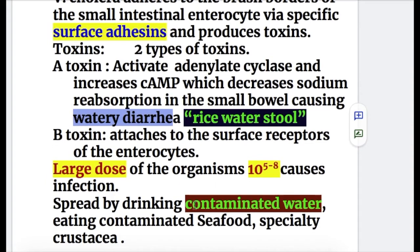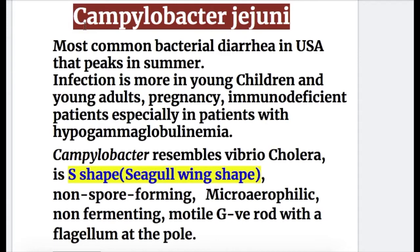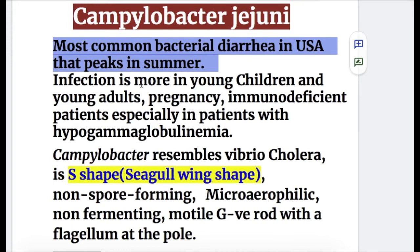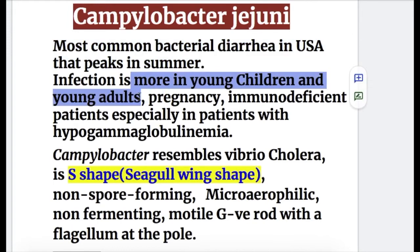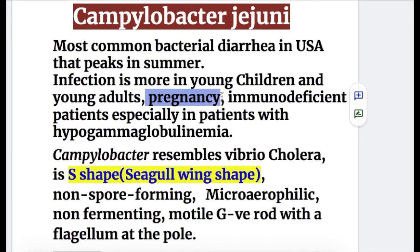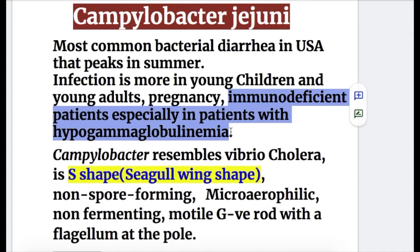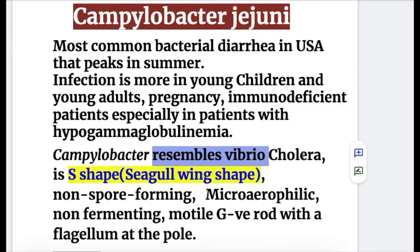The disease is spread by drinking contaminated water and eating contaminated seafood. Now, Campylobacter jejuni — it is the most common bacterial cause of diarrhea in the USA, peaking in summer. Infection is more common in young children and young adults. In pregnancy, it may cause septic abortion. Immunodeficient patients, especially those with hypogammaglobulinemia, may also suffer Campylobacter jejuni infection.